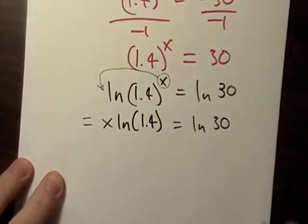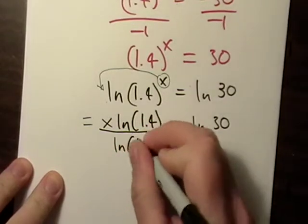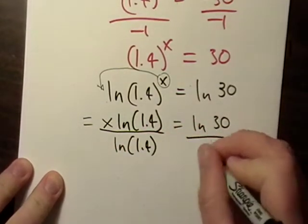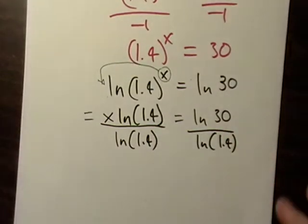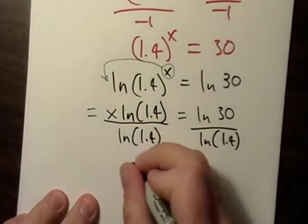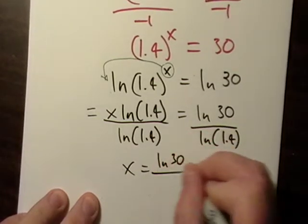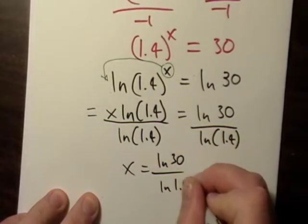Now, it looks like I've got something I can work with. Why don't I divide both sides by natural log of 1.4? And x is going to be equal to natural log of 30 over natural log of 1.4.